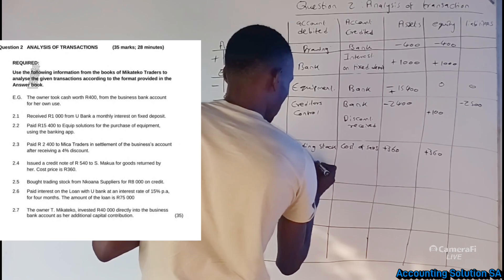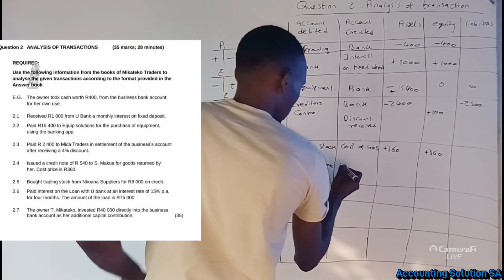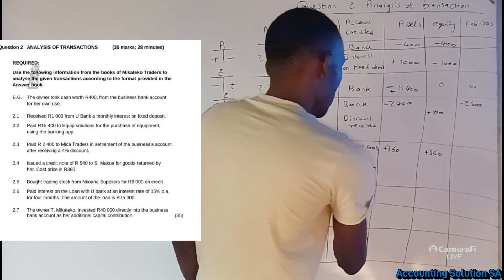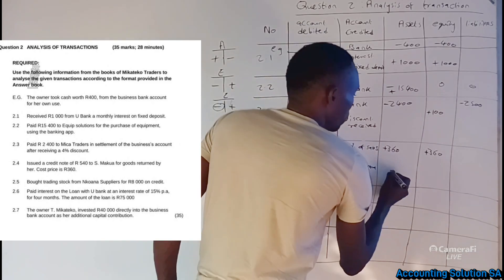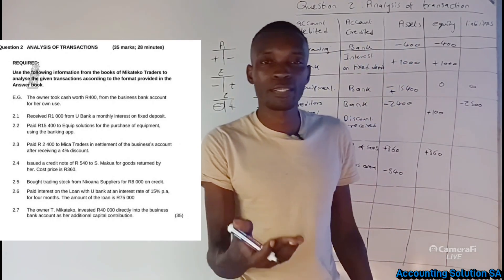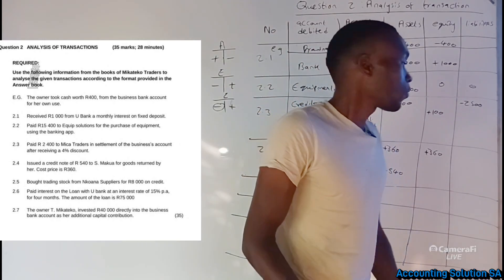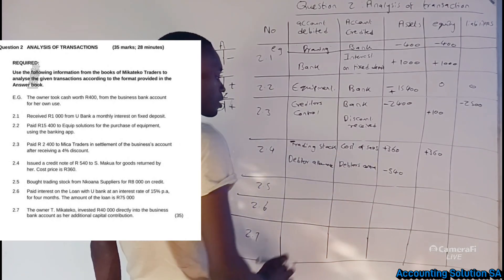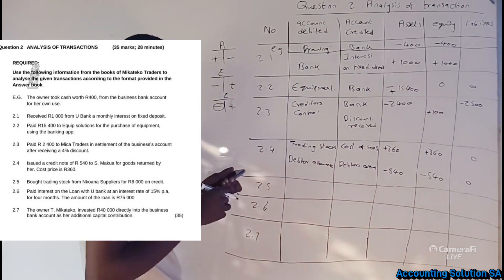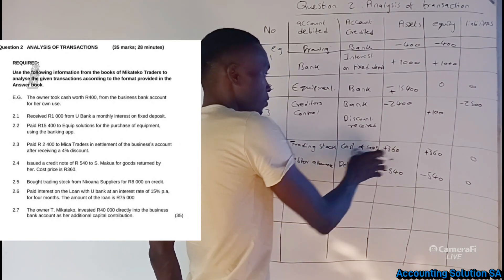We also record the Sales Allowance under equity. When a customer returns something, we debit Sales Allowance. The Debtors Control, which is an asset, must be reduced — this customer no longer owes R540. So Debtors Control is credited and reduced by R540. Liability is not affected. This transaction carries four entries worth eight marks.